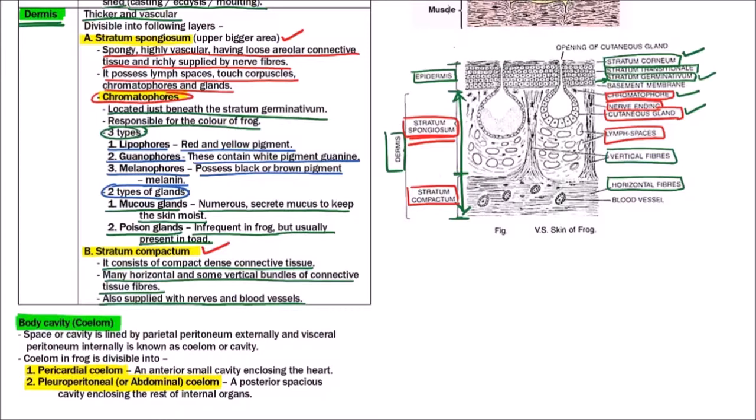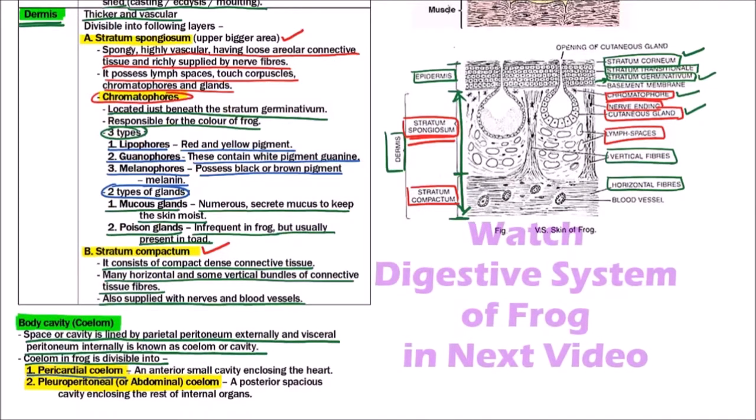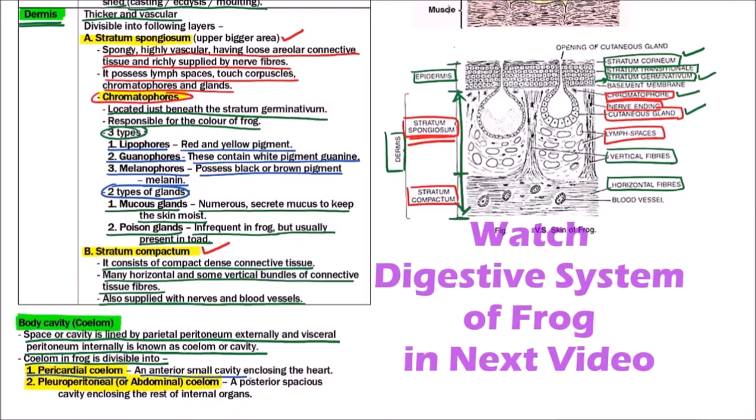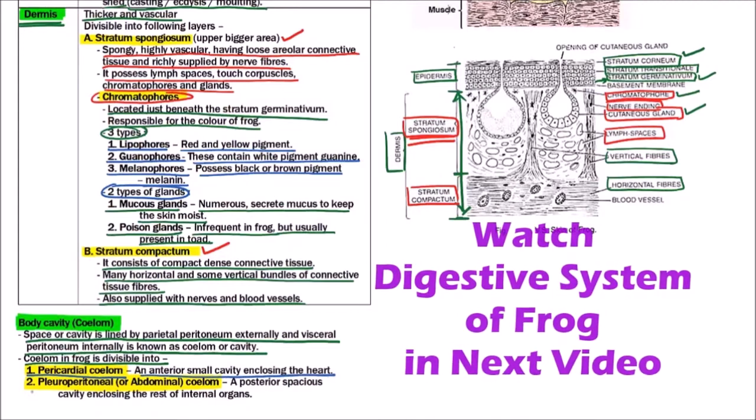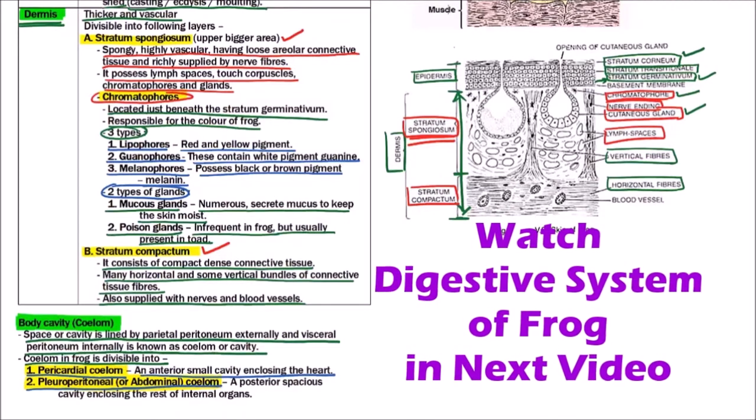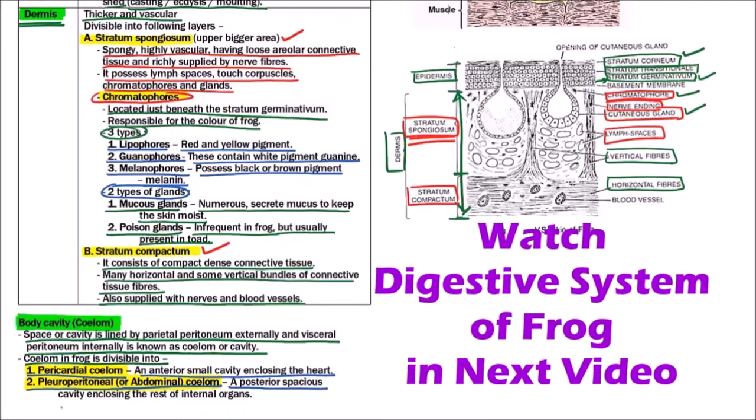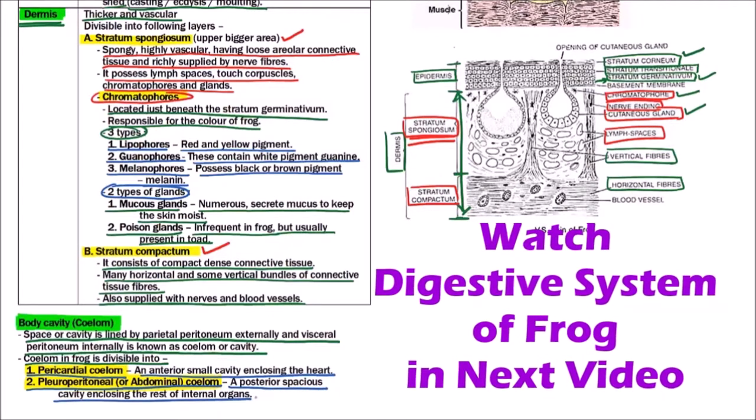Now the next is body cavity or coelome. Space or cavity is lined by parietal peritoneum externally and visceral peritoneum internally, and that space is known as coelome or cavity. Now coelome in frog is divisible into two on the basis of location: one is pericardial coelome, that is an anterior small cavity enclosing the heart, and another one is pleuroperitoneal coelome or abdominal coelome, which has the rest of the visceral organs of the body.